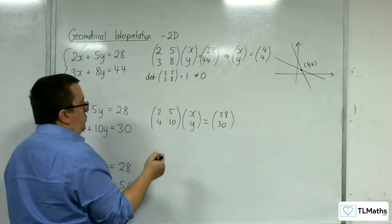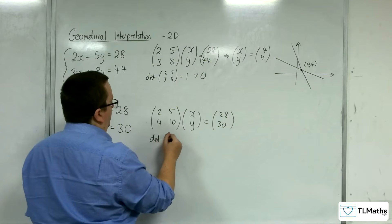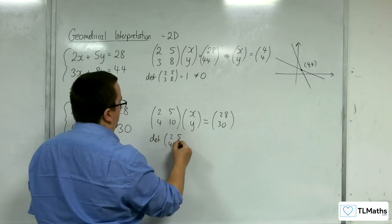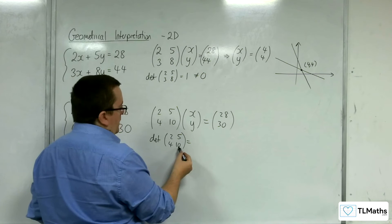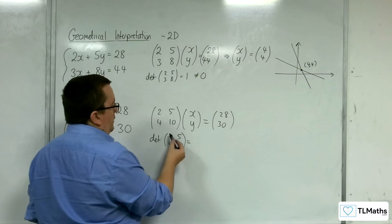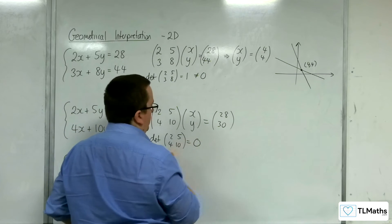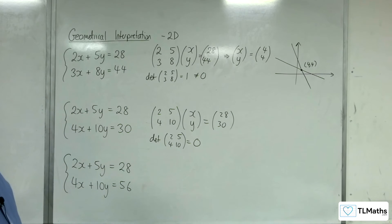Now, in this situation, if we looked at the determinant of this matrix, 2, 5, 4, 10, you're going to get 2 lots of 10, take away 4 lots of 5. 20, take 20, take 20. Okay. So we get 0 determinant.